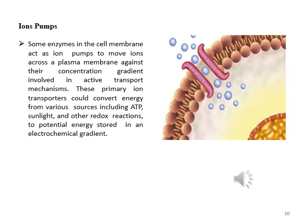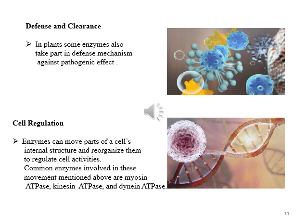These primary ion transporters convert energy from various sources including ATP, sunlight, and other redox reactions to potential energy stored in an electrochemical gradient. Some enzymes also take part in defense mechanisms against pathogenic effects. Enzymes can reorganize parts of a cell's internal structures to regulate cell activities. Common enzymes involved in these movements are myosin ATPase, kinesin ATPase, and dynein ATPase.